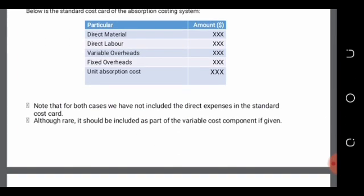Note that direct expenses have not been included in the standard cost card shown. But if given in a question, direct expenses represent a variable cost component. An example of direct expenses is when you need to produce a product but must hire a machine you do not own — those hire costs form the direct expenses of the product.